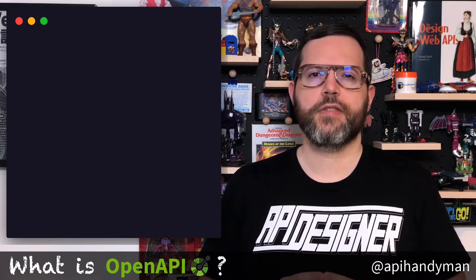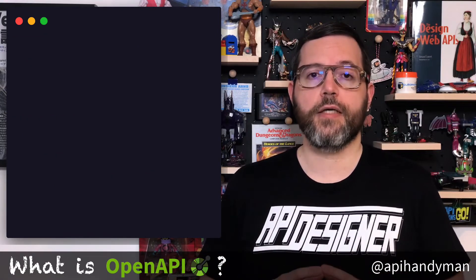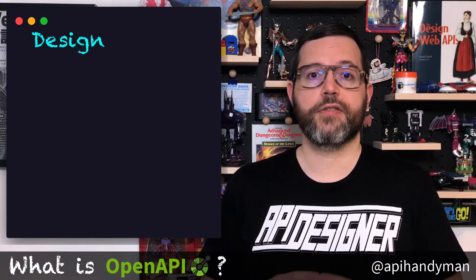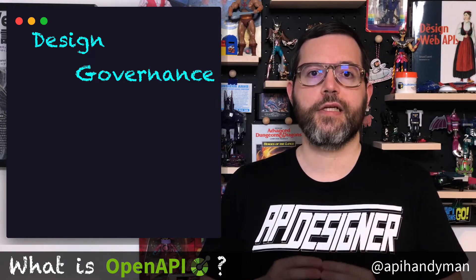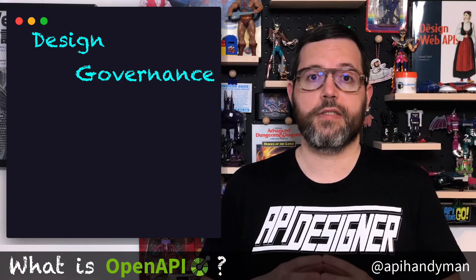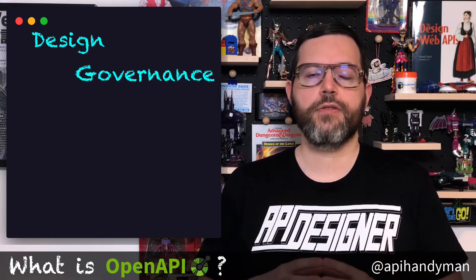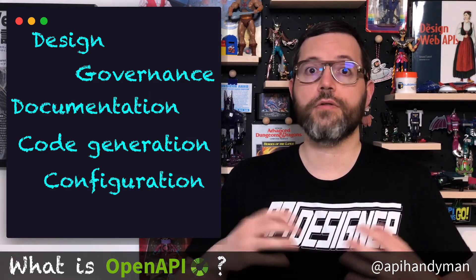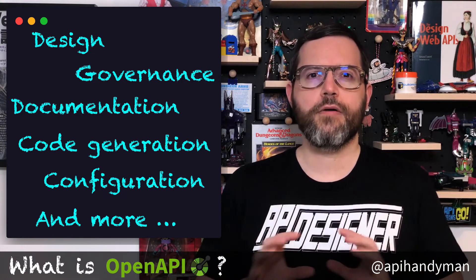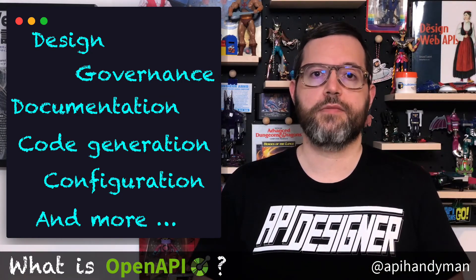The OpenAPI specification has many uses along the whole lifecycle of APIs. An API design tool can generate an OpenAPI document, a linter can analyze it to check if the design of the API conforms to API design guidelines, and the same document can be used to generate documentation, code, or configure an API gateway. And these are only a fraction of the endless possibilities of the OpenAPI specification.